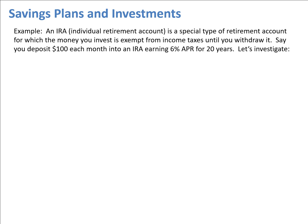An example of a savings plan like this might be saving for retirement. In particular, an IRA — which is an Individual Retirement Account — is a special type of retirement account in which the money you invest is exempt from income tax until you withdraw it. Let's say we deposit $100 each month into an IRA earning 6% annually, or 6% APR, for 20 years.